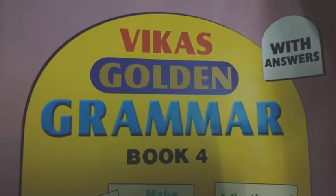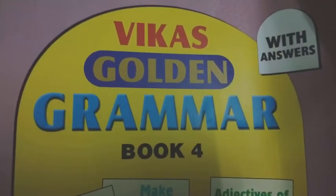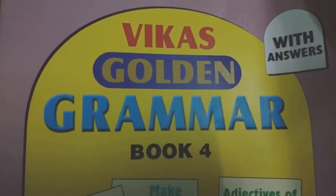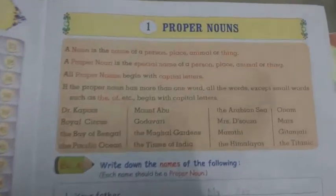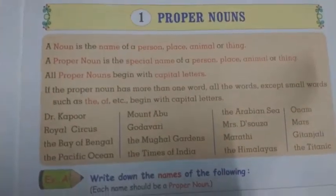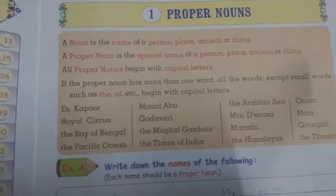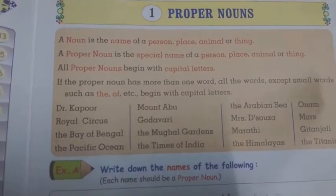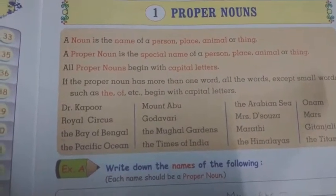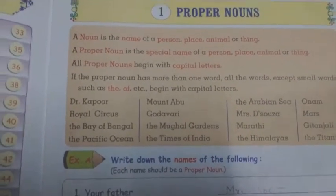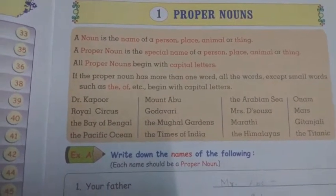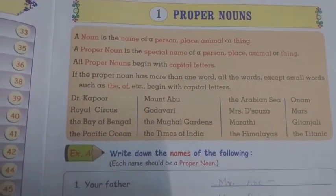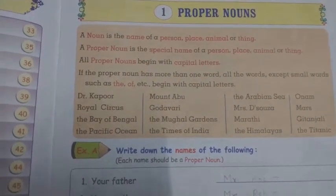Hello children, good morning. Today we'll do the first topic from the Vikas Golden Grammar Book 4. The first topic is proper nouns. Children, what are nouns? Nouns are the names of a place, person, animal, or thing. A proper noun is the specific or particular name of a person, place, animal, or thing.